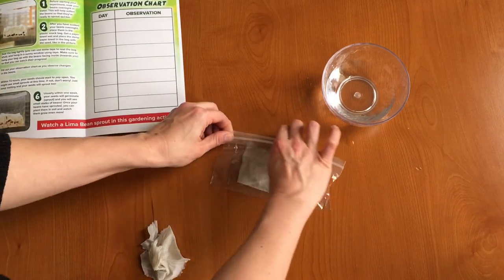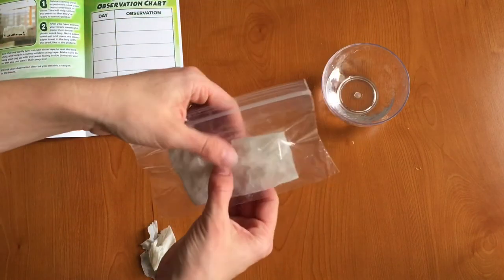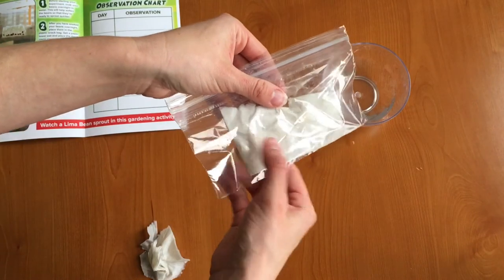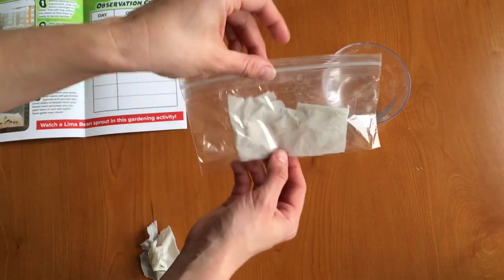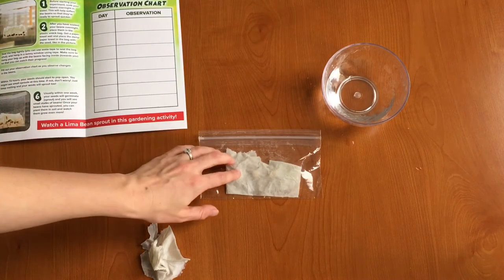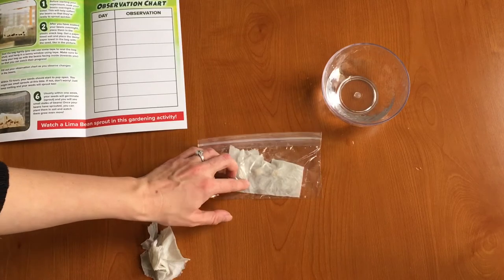Next what you want to do is close your baggie up nice and tight and you're going to hang it in a sunny window so you can kind of see that we have our three lima beans in there. Hang it in a sunny window and within 72 hours your lima beans should start to sprout so you should start to see little tendrils of roots coming out.